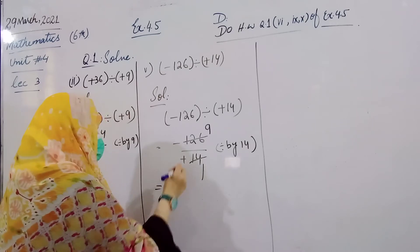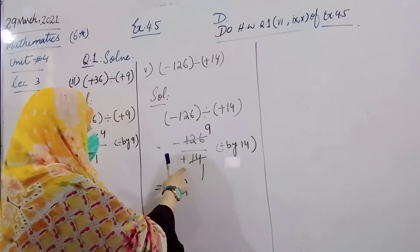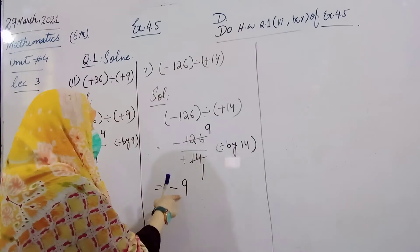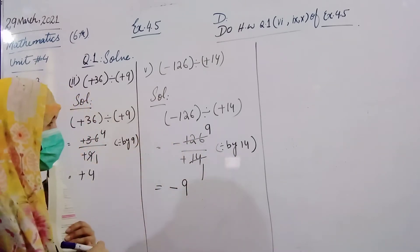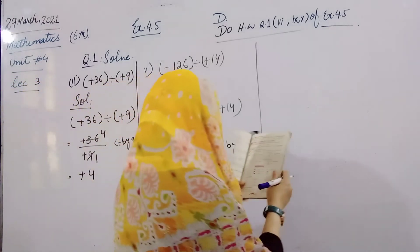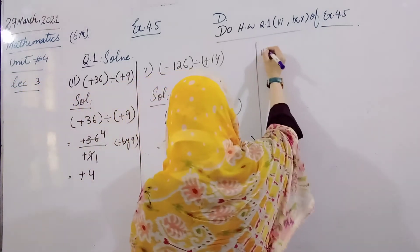Plus or minus, so answer is minus 9. Okay, minus 9 times 14 equals minus 126. Next question number 8.